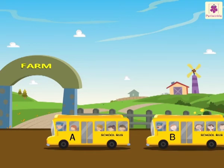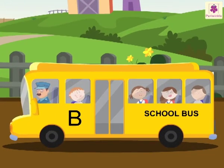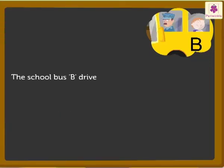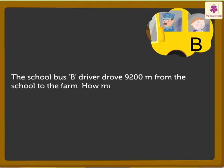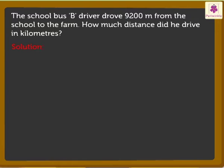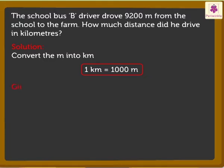Now, let's find out how much distance the school bus B driver drove. The school bus B driver drove 9,200 meters from the school to the farm. So, how much distance did he drive in kilometers? Here, we have to find out the answer in kilometers, so we need to convert the meters into kilometers. We already know that 1 kilometer is equal to 1,000 meters. Here, we have to convert 9,200 meters into kilometers. Look at the number 9,200. Here, the first three digits from the right show the meters, that is 200.